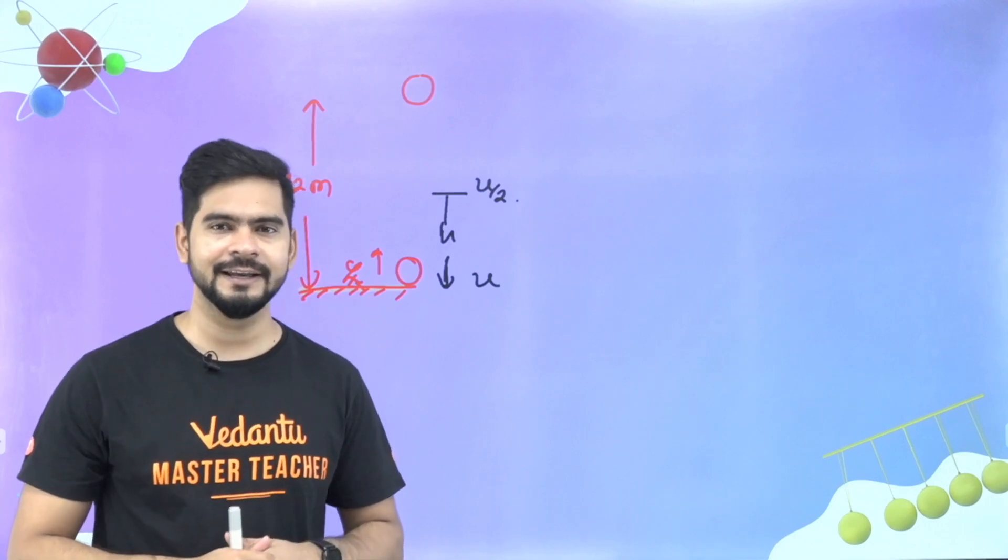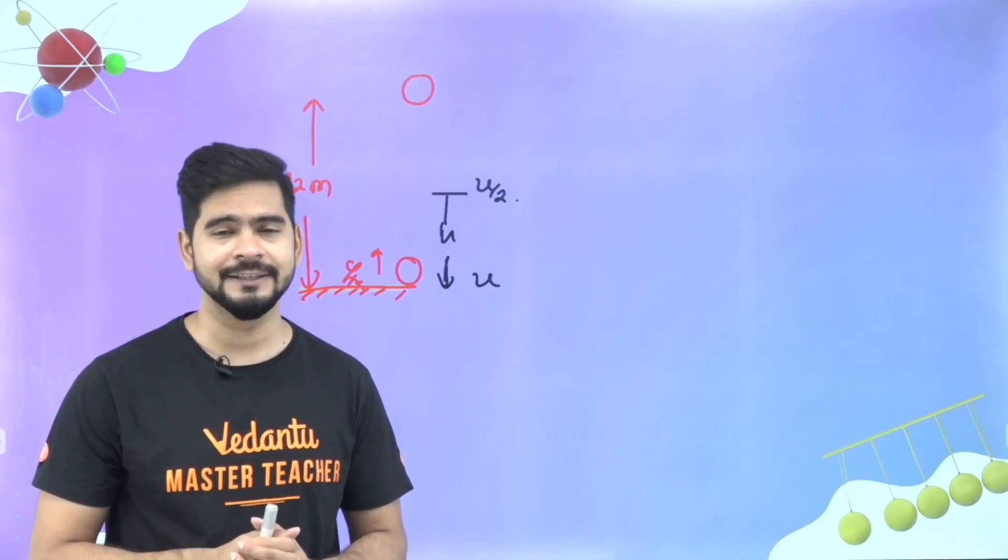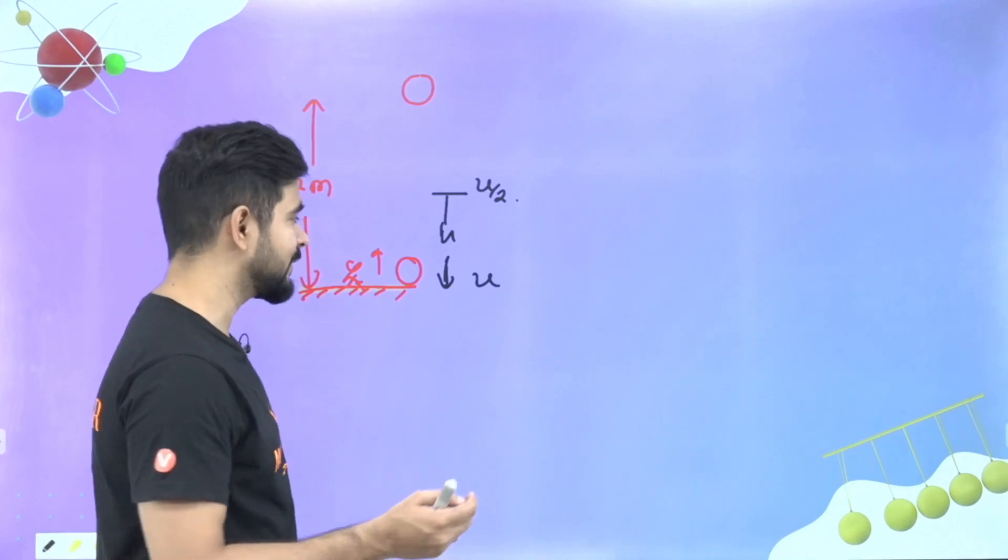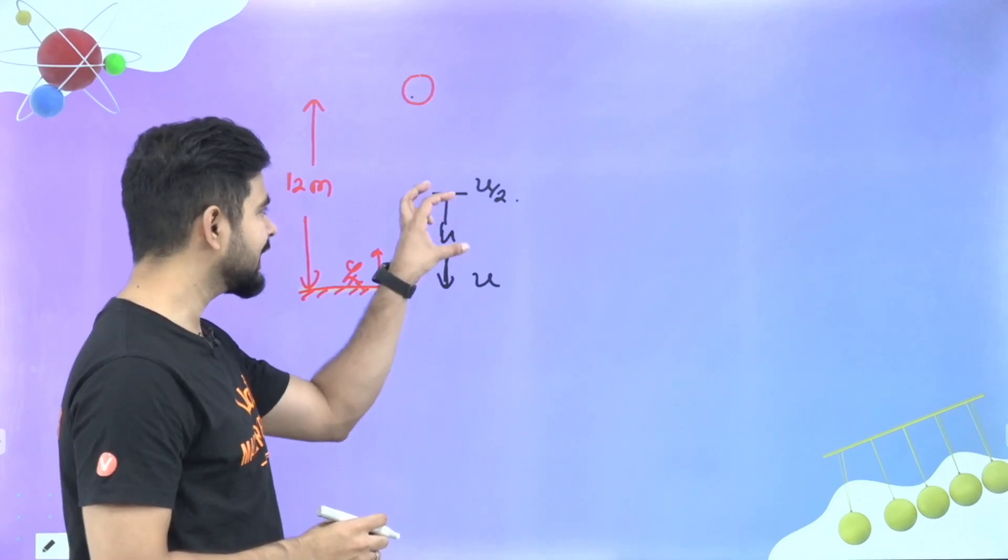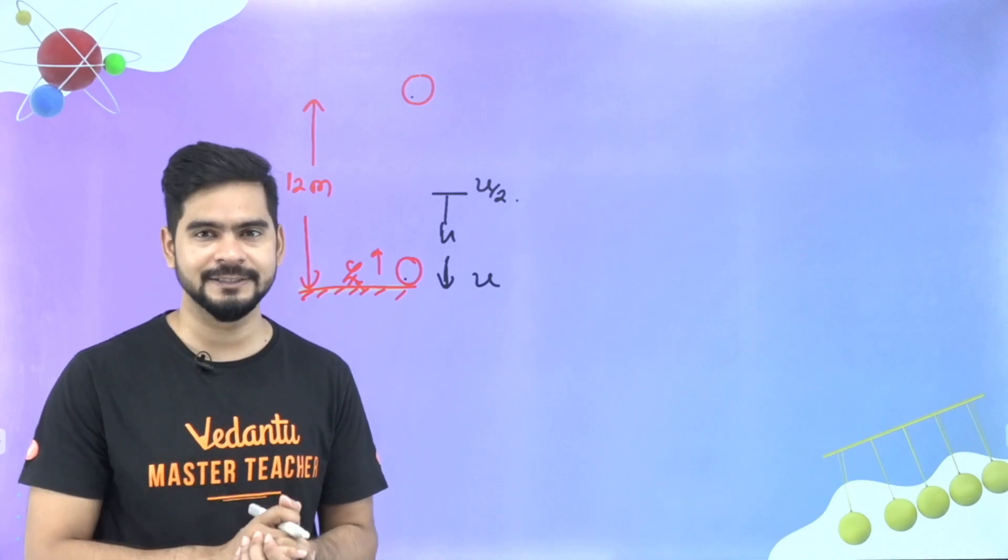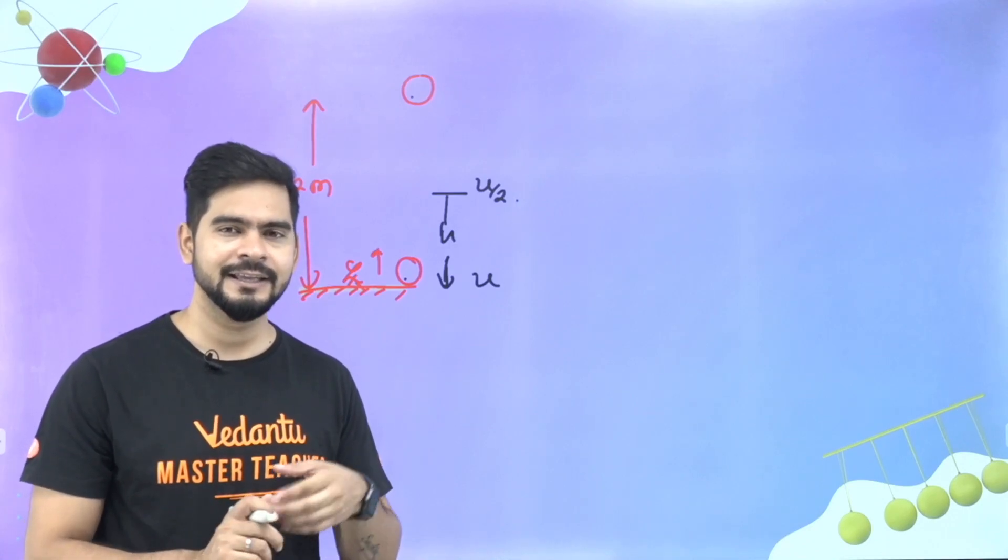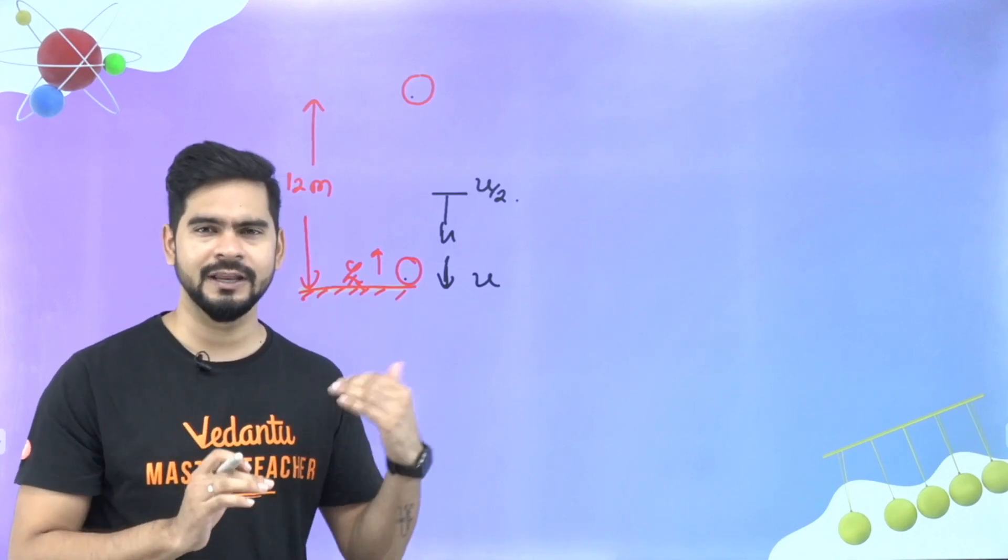For solving this question, many students will go straight into kinematic equation. And I know that my dear student, that you will apply here 2ad is equal to v squared minus u squared. And then in this situation, 2ad is equal to v squared minus u squared. And then you will do comparison. In this situation, it is a big step.